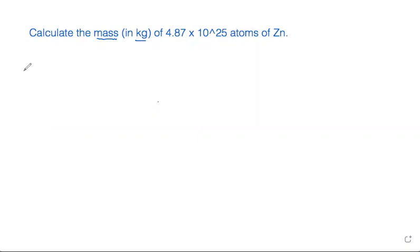So we start with the number that we're given, the 4.87 times 10 to the 25th atoms of zinc. And we can't convert directly from atoms to mass or to grams. So we first have to do a conversion of atoms to moles.